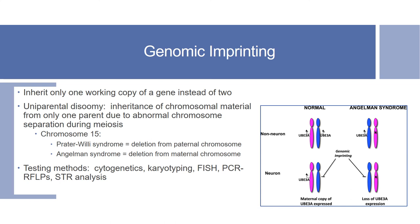Genomic imprinting occurs when only one working copy of a gene is inherited instead of two. Uniparental disomy refers to the inheritance of chromosomal material from only one parent due to abnormal chromosome separation during meiosis, which can lead to genomic imprinting. An example involves chromosome 15: a deletion from the paternal chromosome 15 results in Prader-Willi syndrome, while a deletion from the maternal chromosome 15 results in Angelman syndrome. Testing methods include cytogenetics, karyotyping, FISH, PCR-RFLPs, and short tandem repeat analysis.